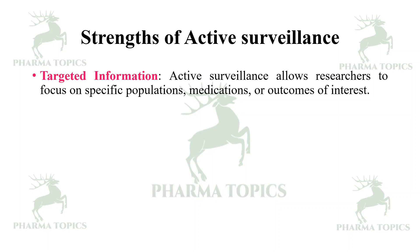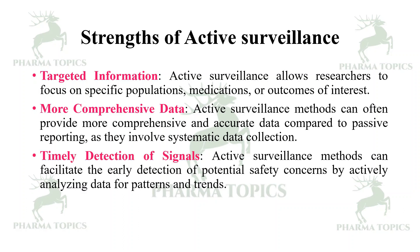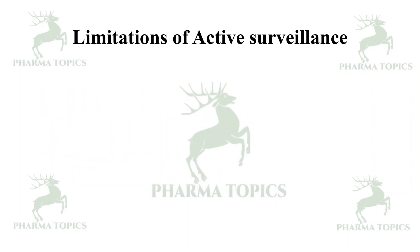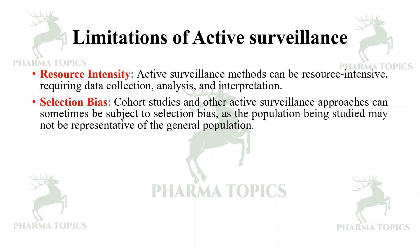Strengths of active surveillance: It allows researchers to focus on specific populations, medications, or outcomes of interest. Active surveillance methods can provide more comprehensive and accurate data compared to passive reporting, as they involve systematic data collection. They can also facilitate the early detection of potential safety concerns by actively analyzing data for patterns and trends. Limitations include resource intensity, as active surveillance can be resource-intensive requiring data collection, analysis, and interpretation, and selection bias, as the population studied may not represent the general population.